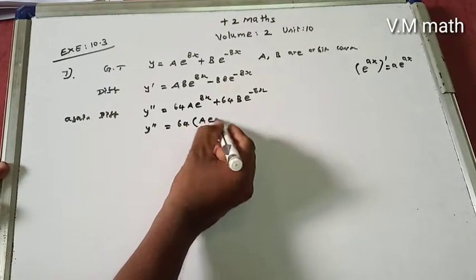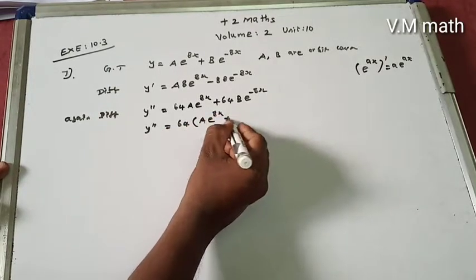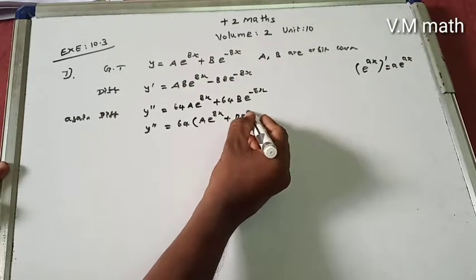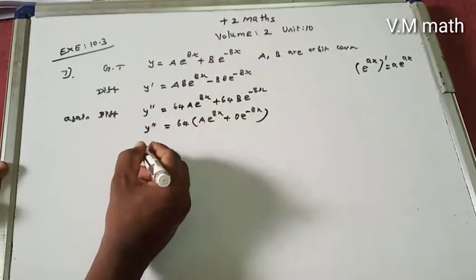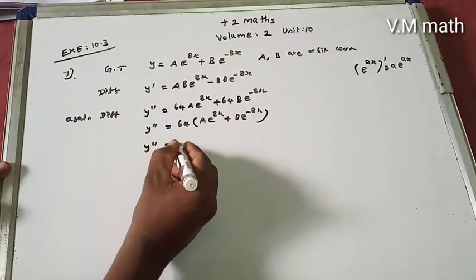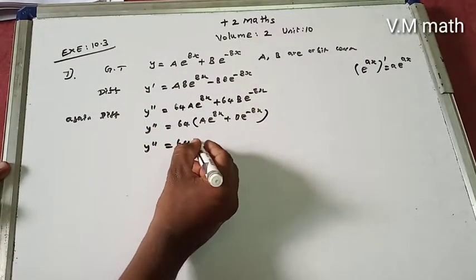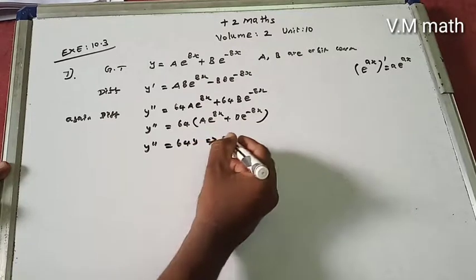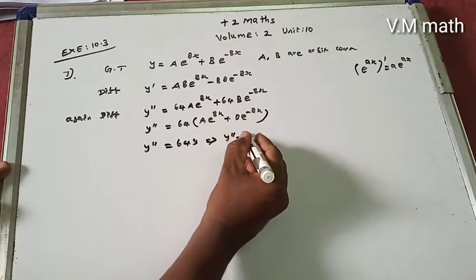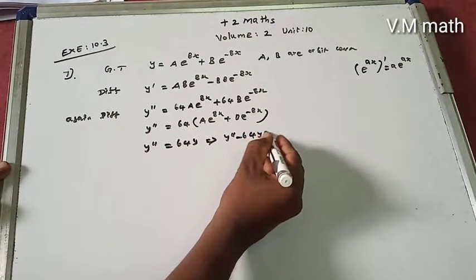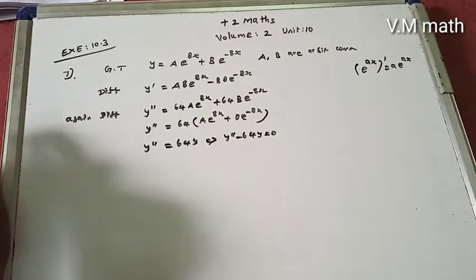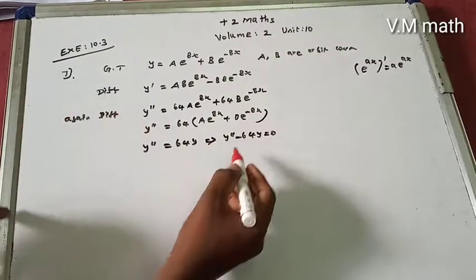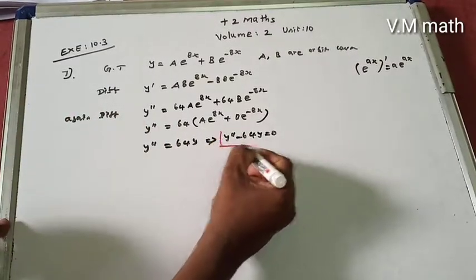Therefore, y double dash equals 64 times the quantity A times e power 8x plus B times e power minus 8x, which equals 64y. So the differential equation is y double dash minus 64y equals zero.